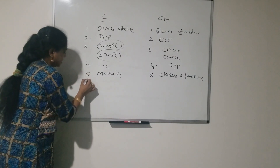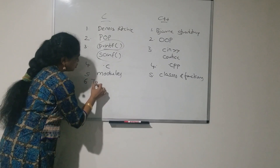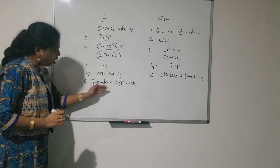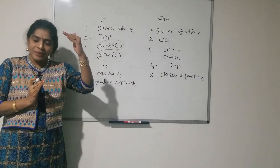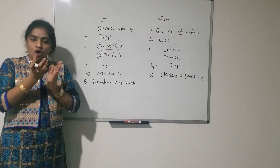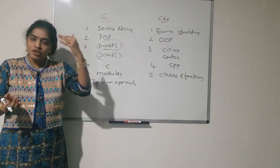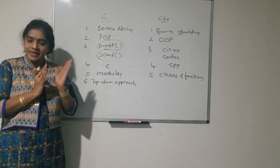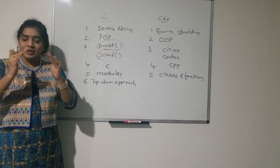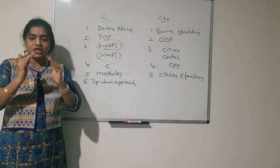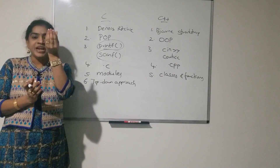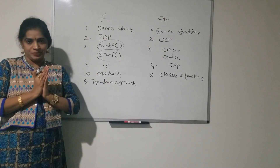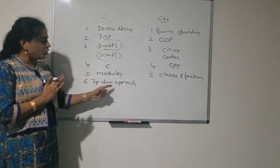C is a top-down approach programming language. Top-down approach means the main function is defined at the top and all the sub-functions are defined at the bottom. Through the main function you can call the sub-functions. Decomposition takes place — we divide a large problem into sub-problems using functions. So C follows top-down approach.